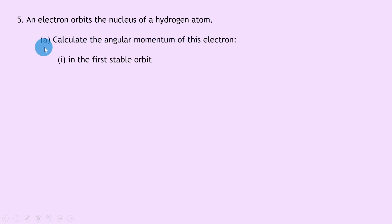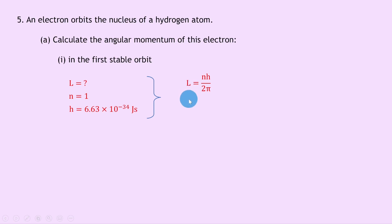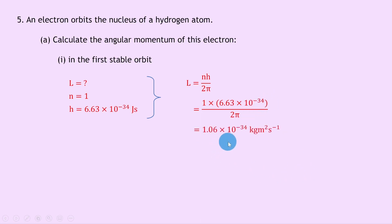Question five says an electron orbits the nucleus of a hydrogen atom. Part a says to calculate the angular momentum in the first stable orbit. We're trying to find angular momentum L. n equals 1 because it's the first orbit, and Planck's constant h is 6.63 times 10 to the minus 34 joule seconds. Our equation is L equals nh over 2 pi — the quantization of angular momentum for the Bohr model. Substituting gives 1 times 6.63 times 10 to the minus 34 divided by 2 pi, giving 1.06 times 10 to the minus 34 kilogram meter squared per second.